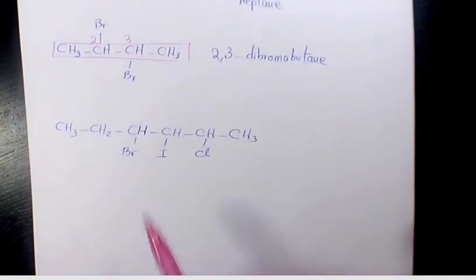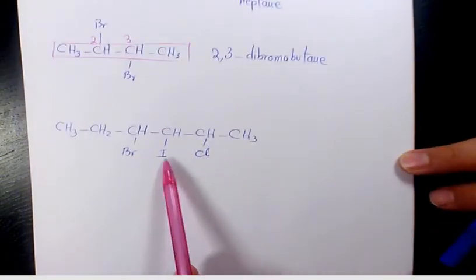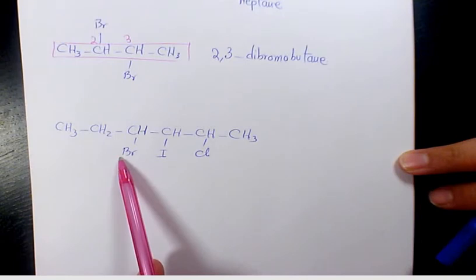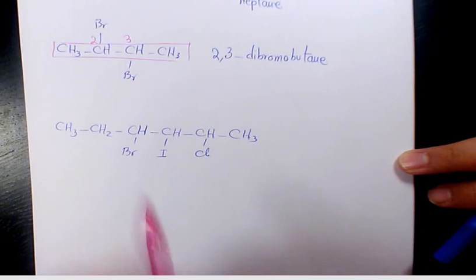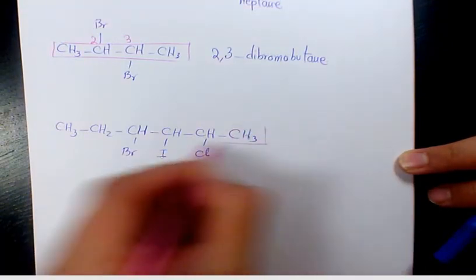Next one, you have fluoro, iodo, iodo and bromo. Starts with B, starts with I, starts with C. So I'm going to number it from the right hand side, one, two, three, four, five, six.